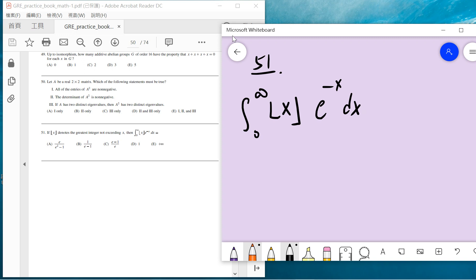You know that the floor is less than x in general, so this integral is definitely smaller than this one, which can be computed by gamma function. This equals one, so the answer can only be a, b, or c. We immediately cancel d and e.